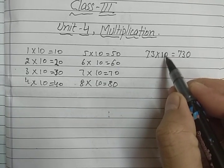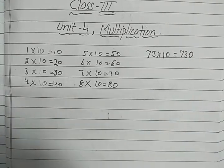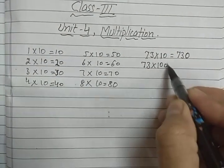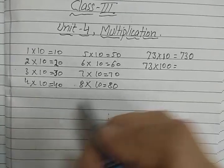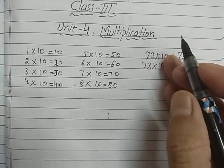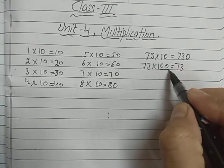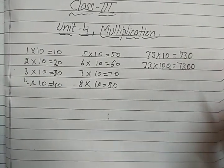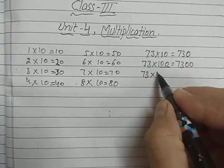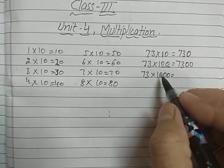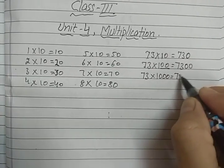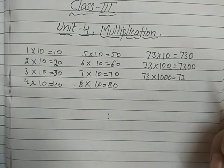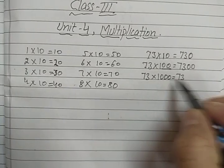Similarly, if we want to multiply any number by 100, we write 73 and then count how many zeros are in 100 — two zeros — so we write two zeros on the right side. And if we want to multiply a number by 1000, in the same way we write 73 and then count the zeros: how many zeros are in 1000? Three. So we write three zeros on the right side.